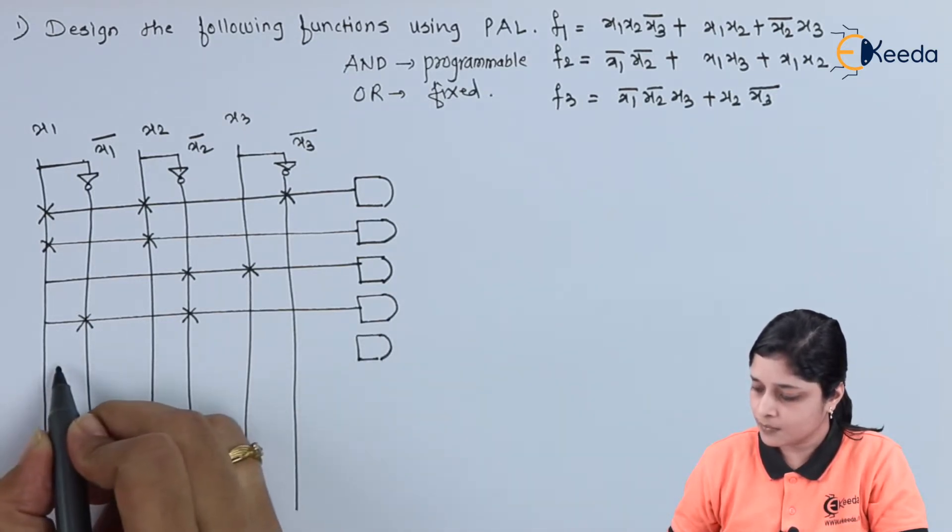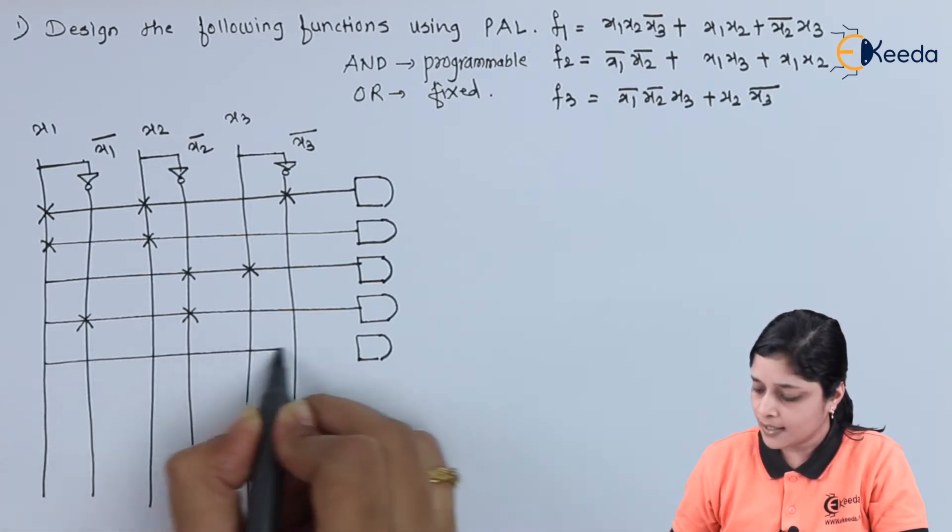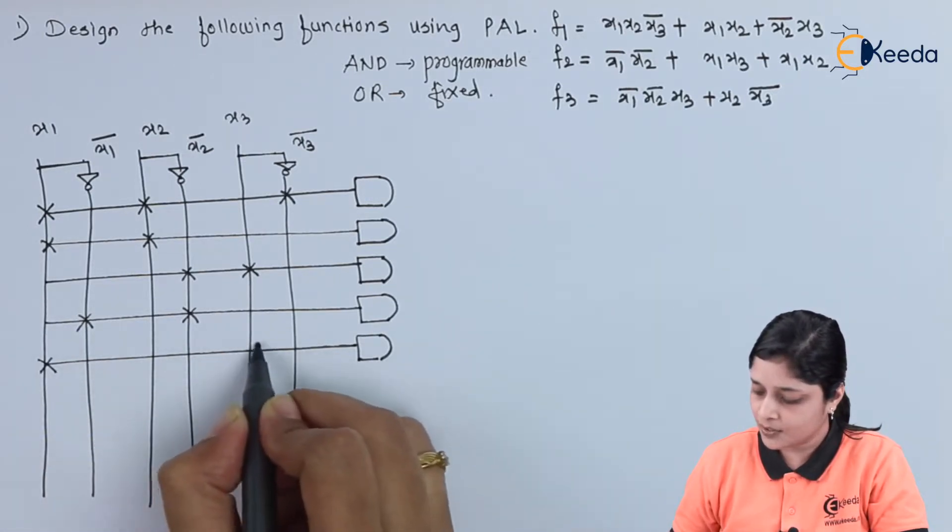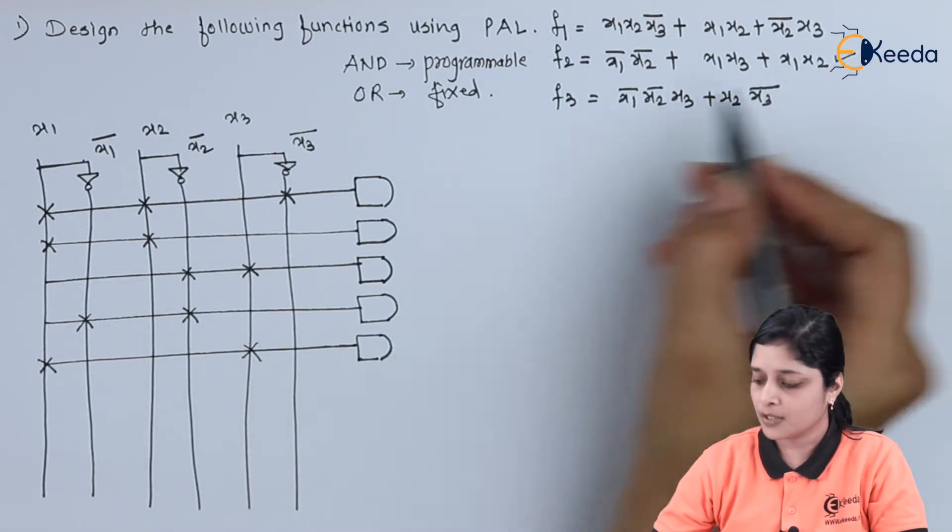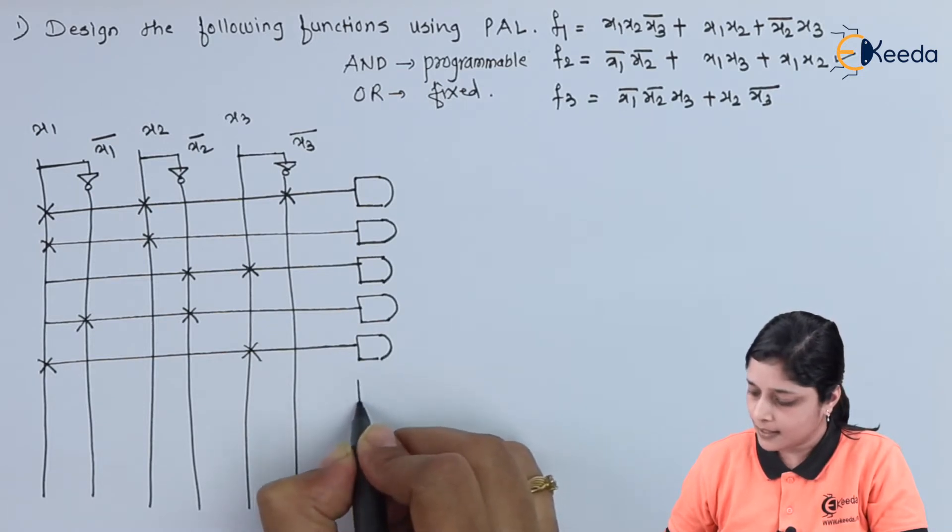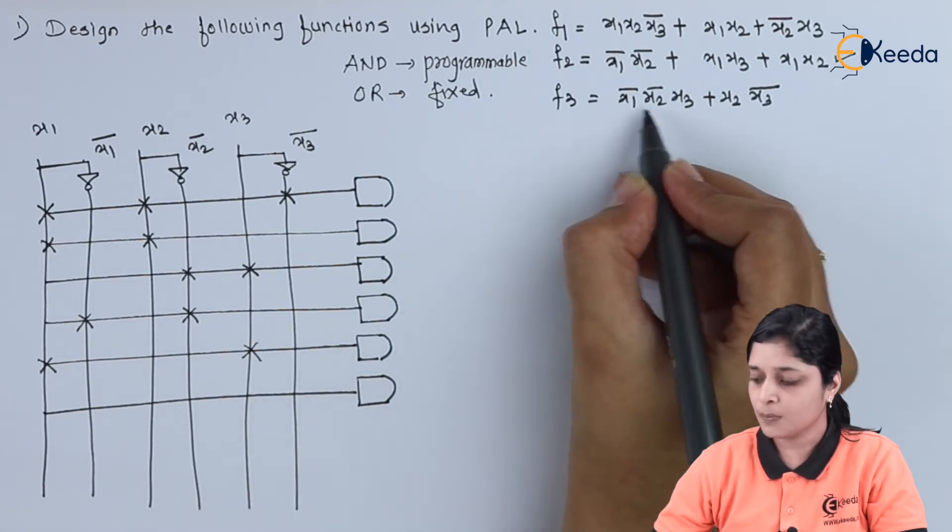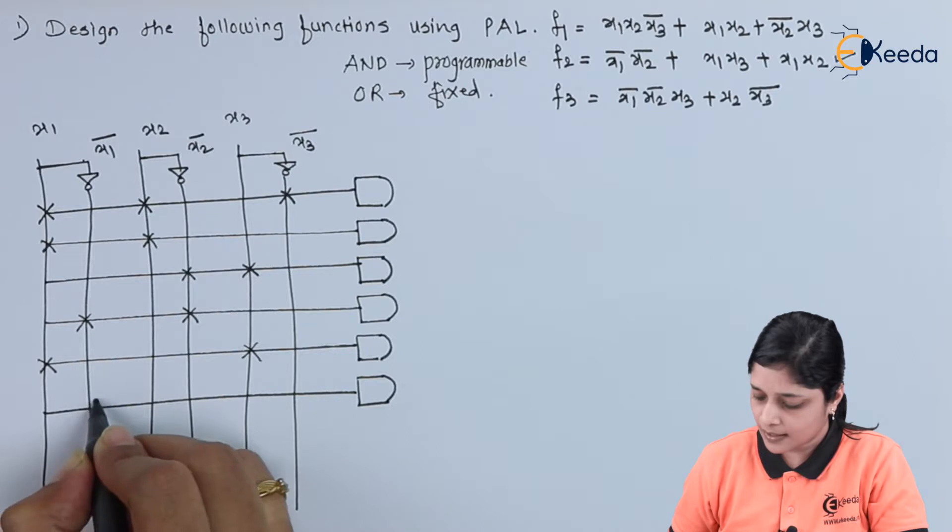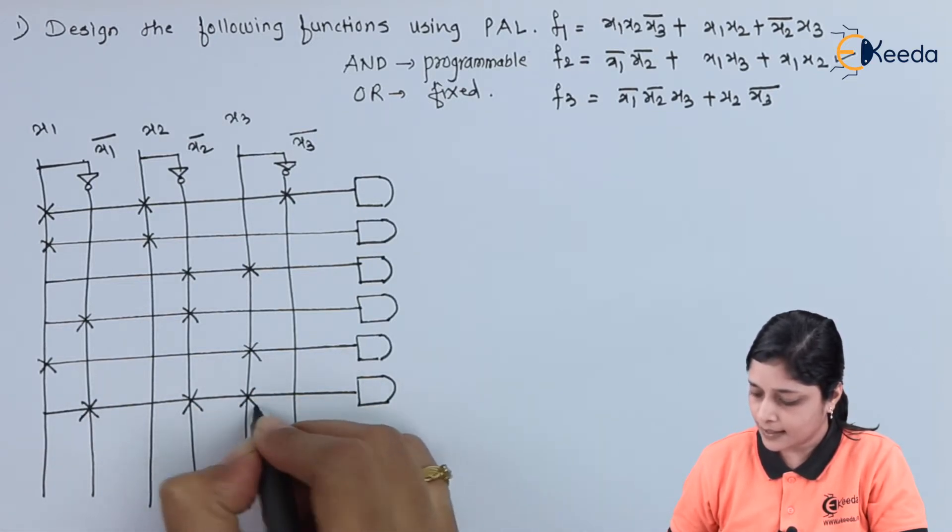Then one more AND gate we require here for implementation of x1 and x3. And the next term present is x1 x2, we already got here. Then this AND gate is for x1 bar x2 bar x3, which is your x1 bar, x2 bar, and x3.